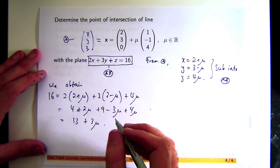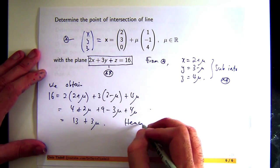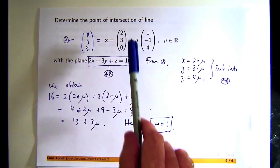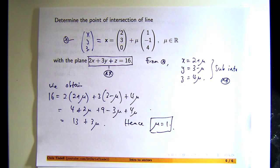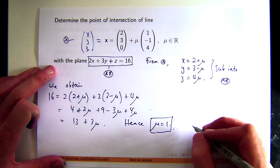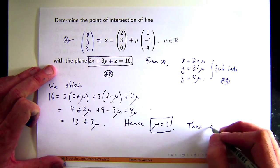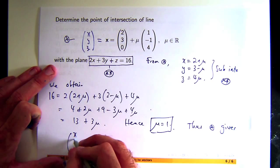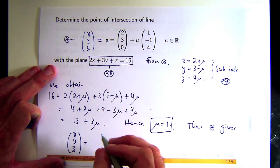So if I solve that I'll get mu equals one. So what I can do now is go back to my line, plug in the value mu equals one, that will give me one point. One value of mu in the parameterization for the line gives you one point.